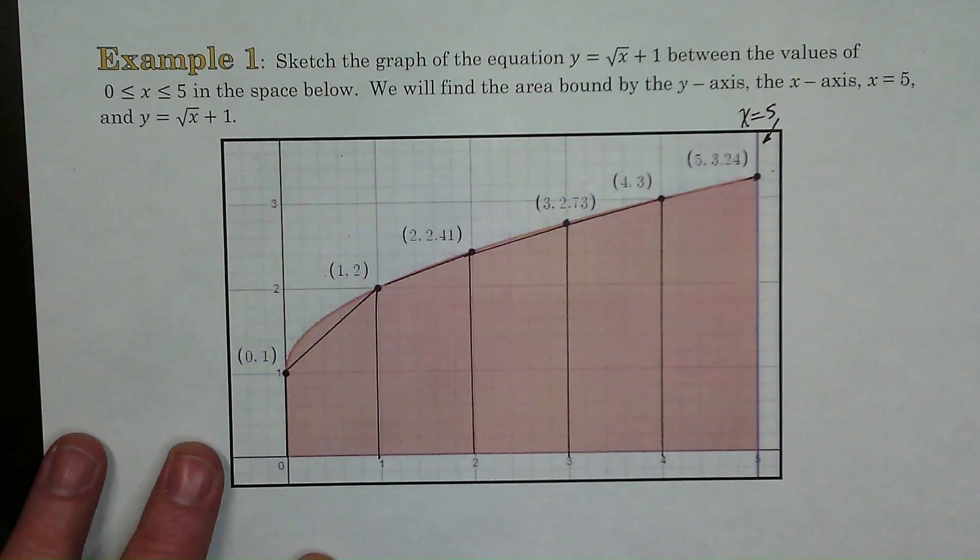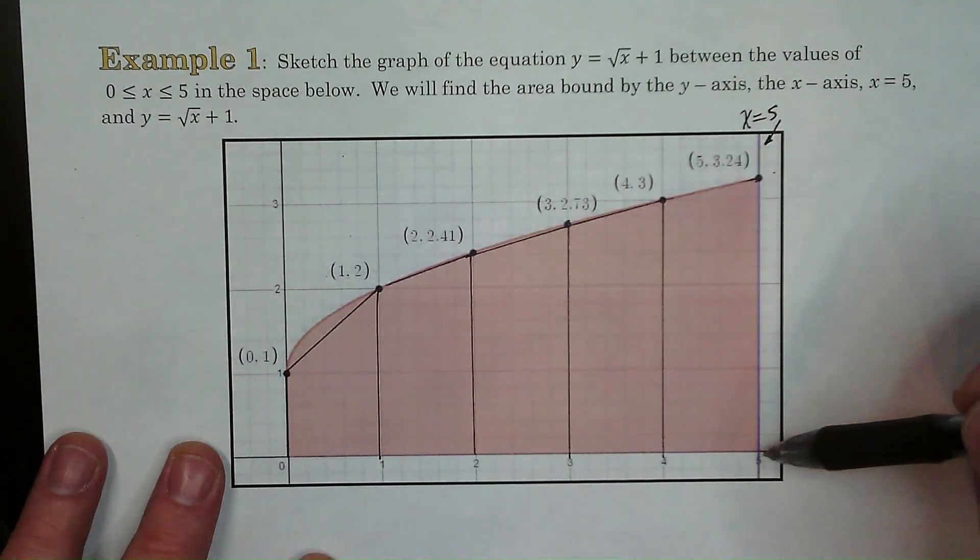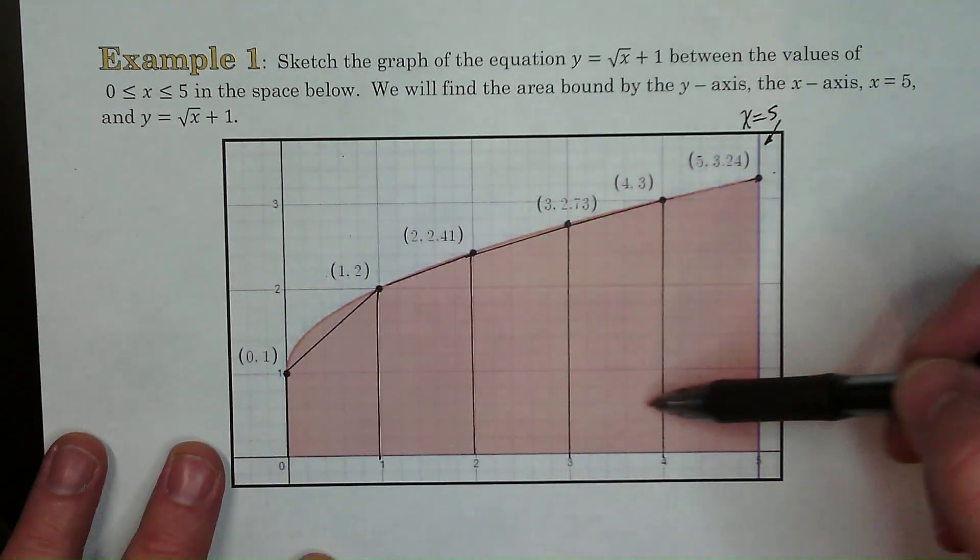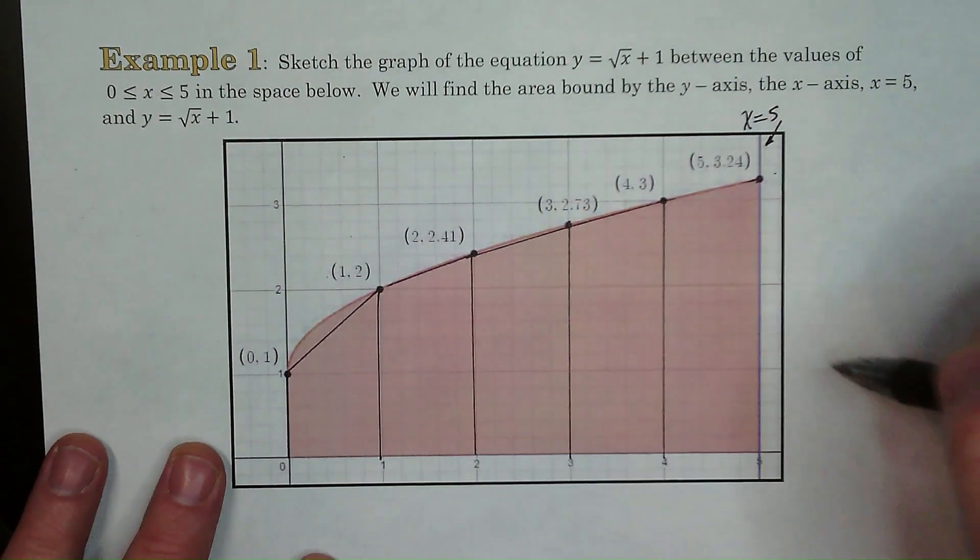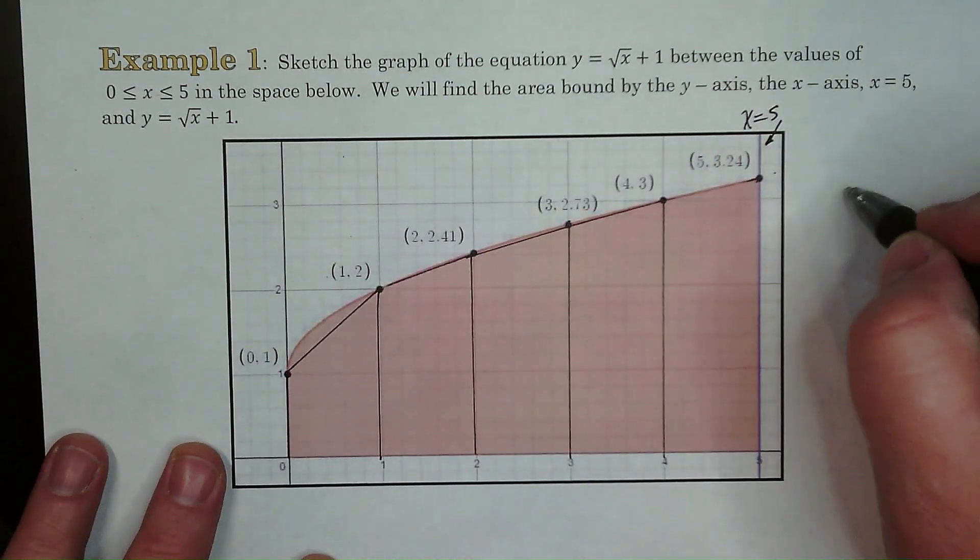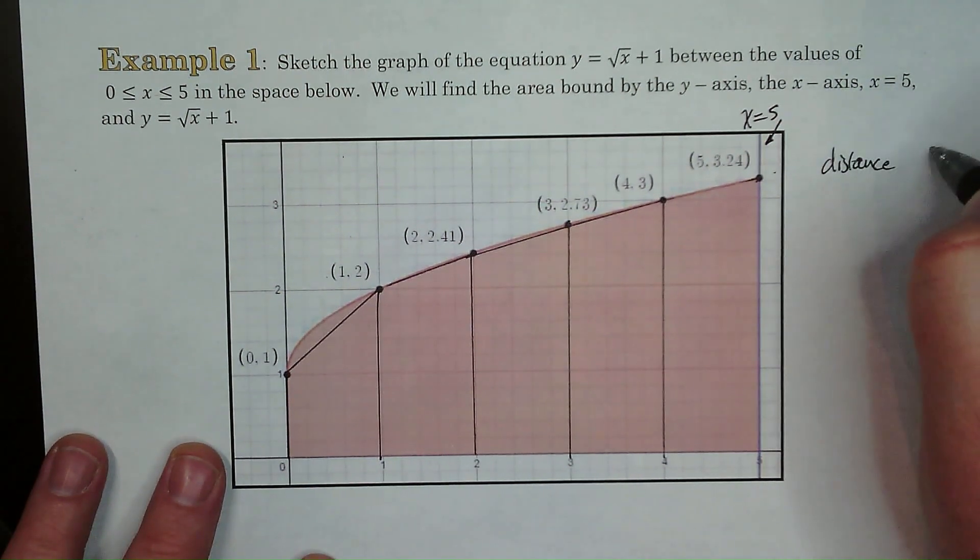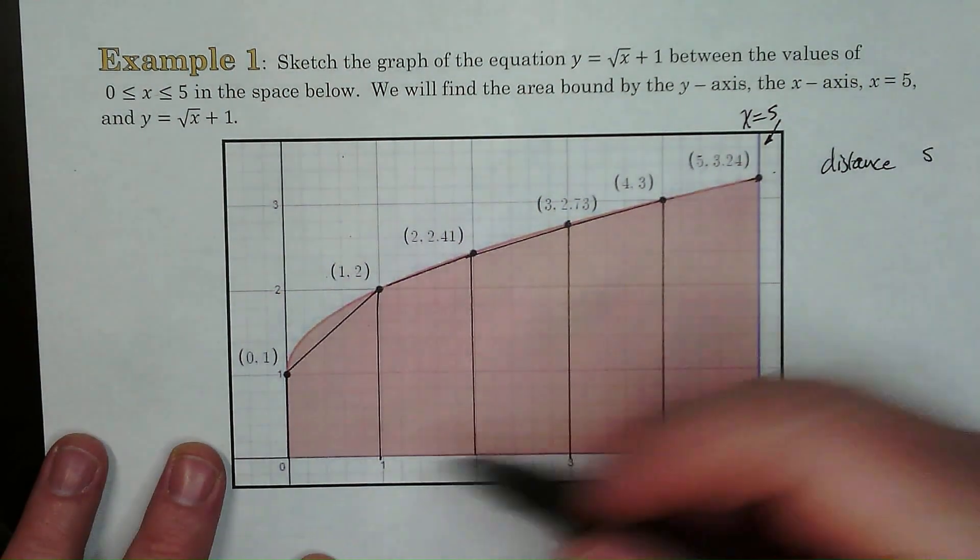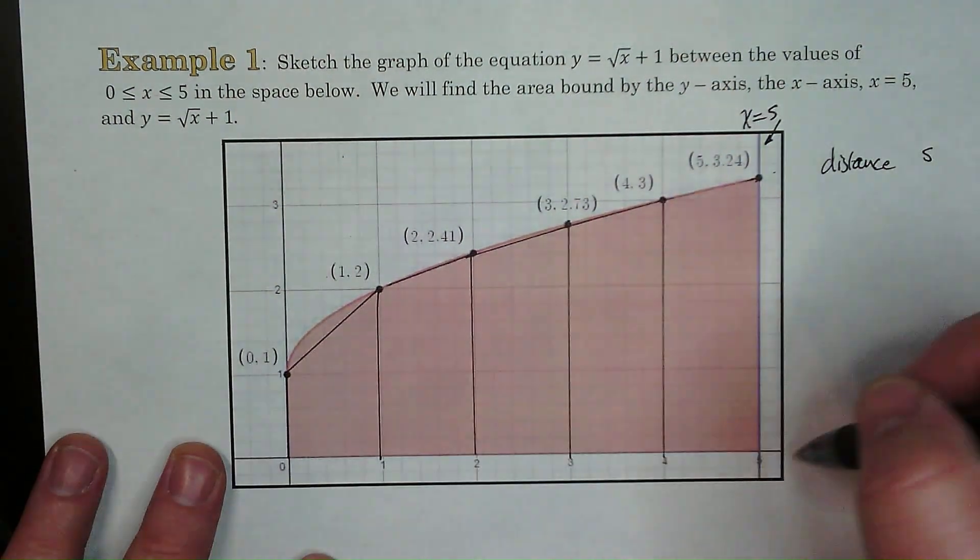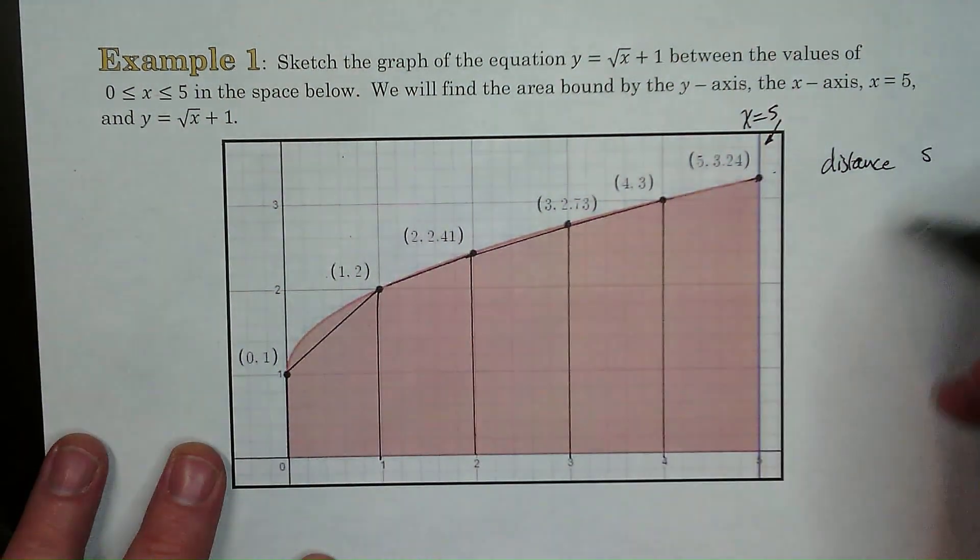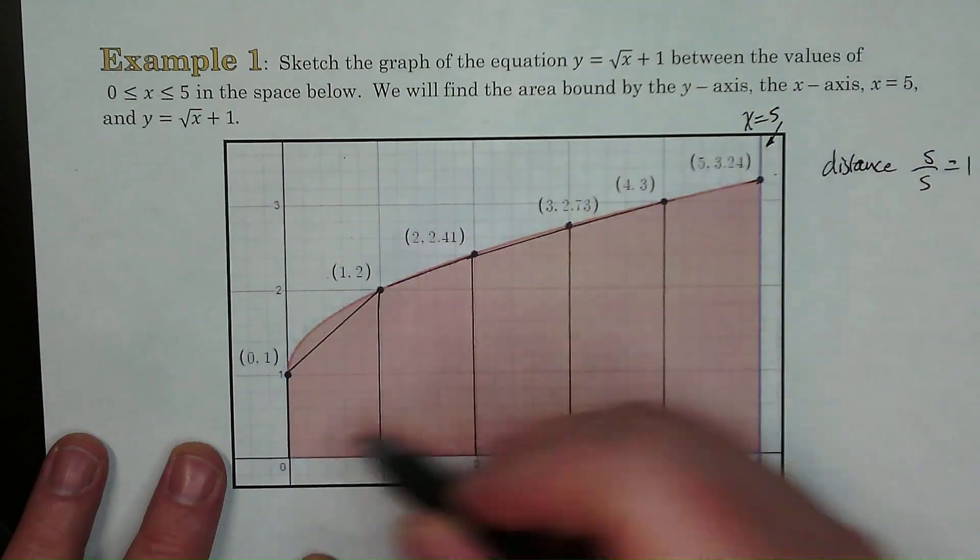A couple things real quick. It's not arbitrary how many trapezoids we have right here. Here it's pretty easy because it turns out to be integers but you see how the distance is five, right? That's zero to five. And so if you wanted to cut that up into five spaces you divide by five and that's why each one of these is one.